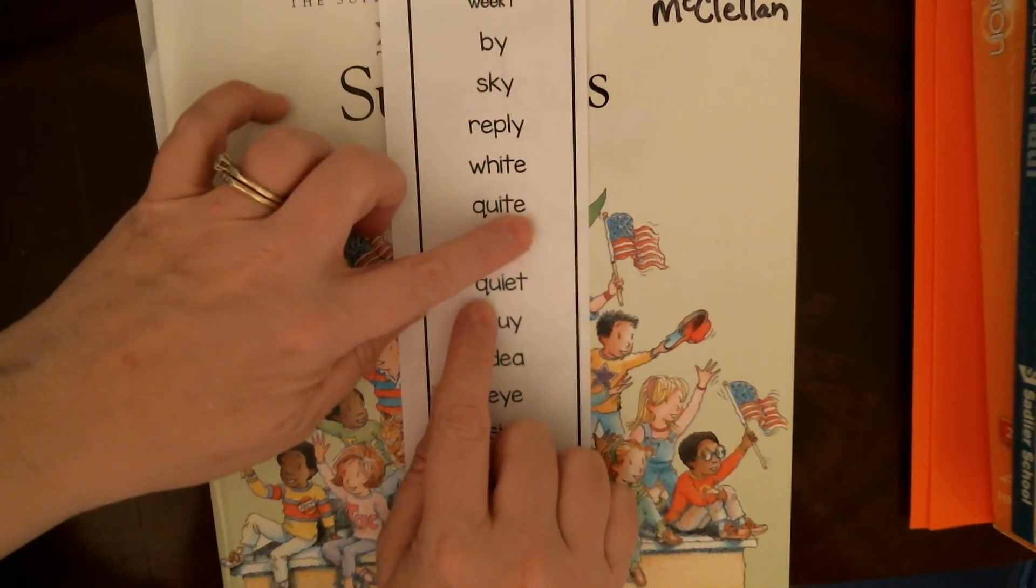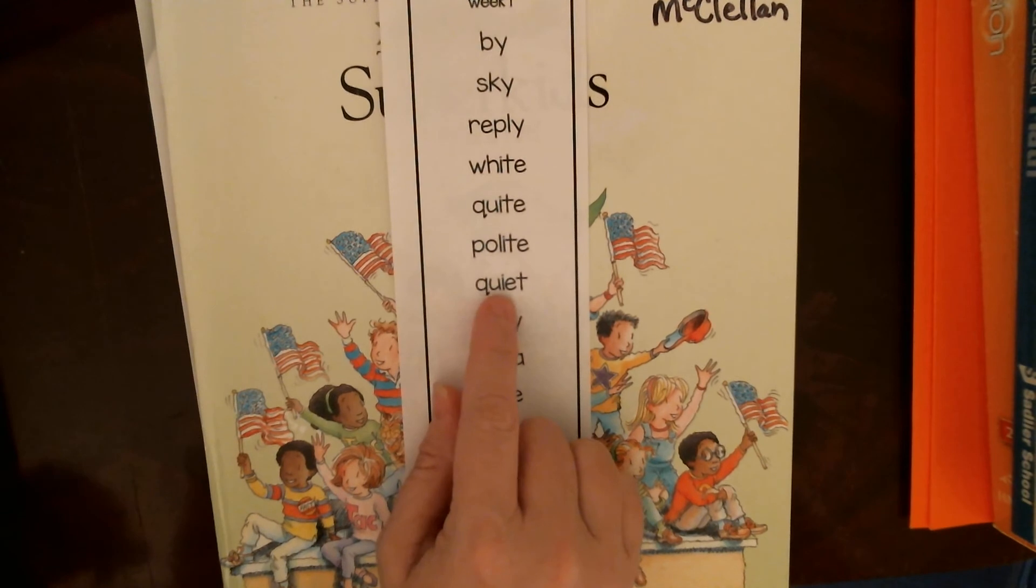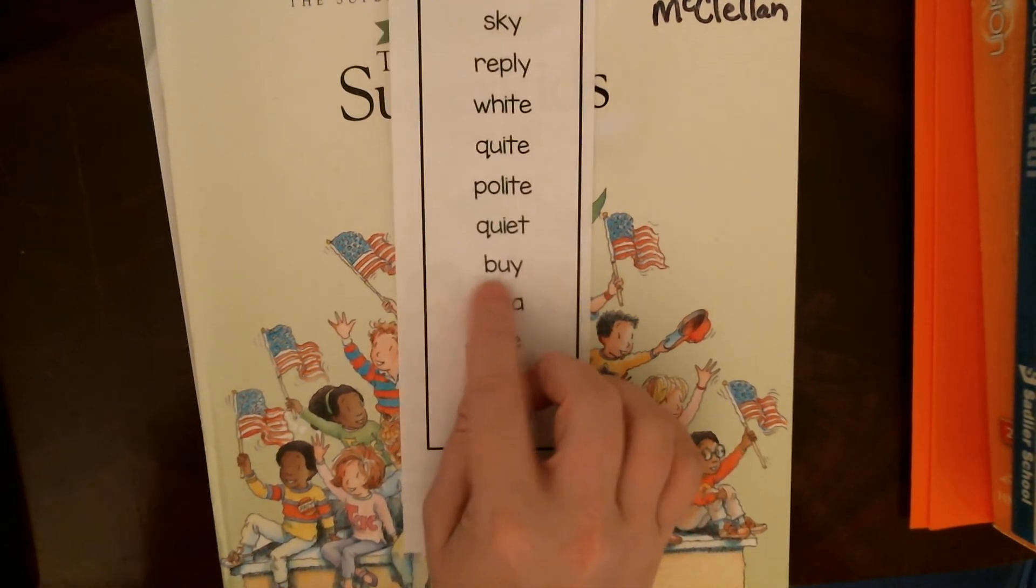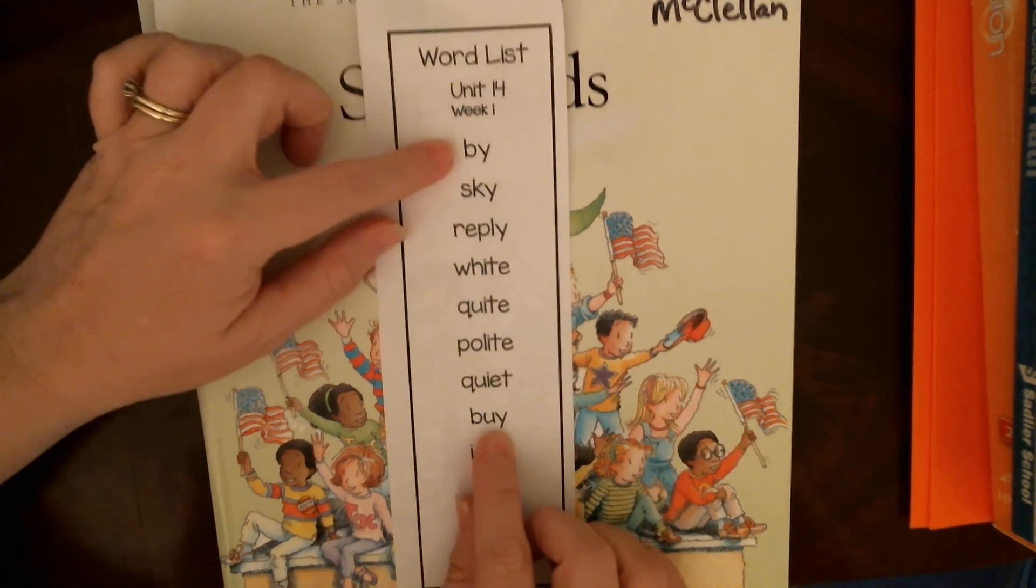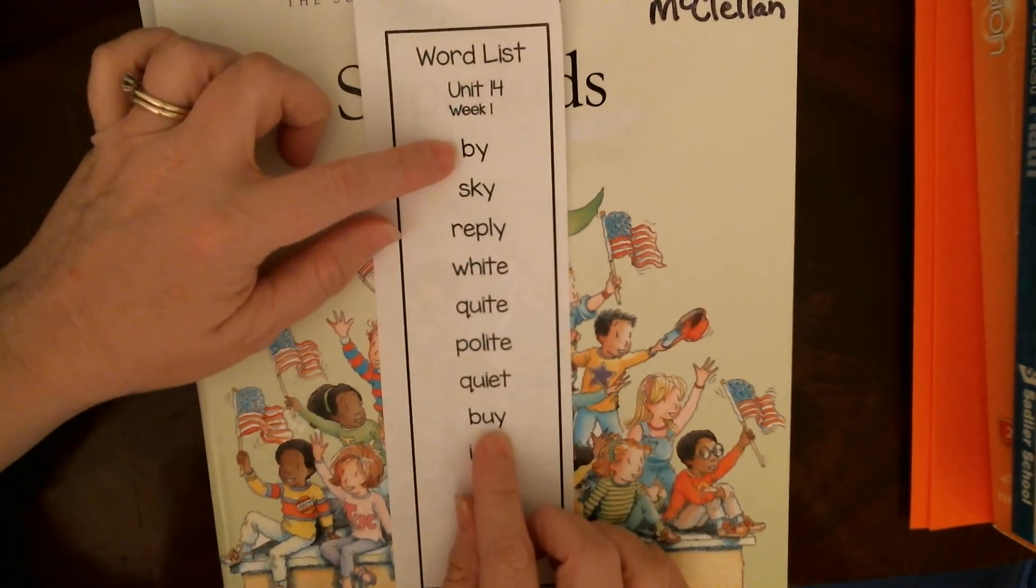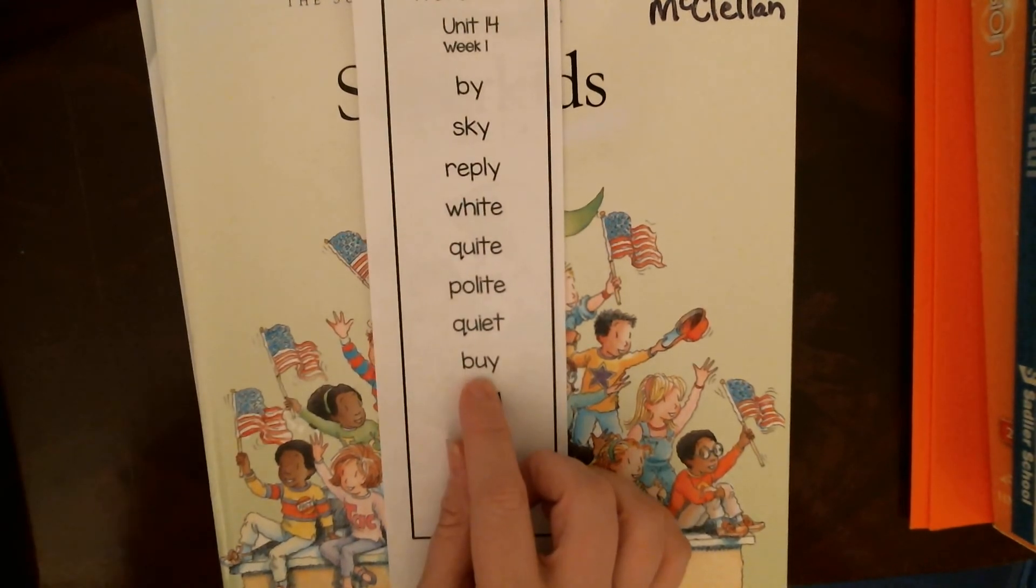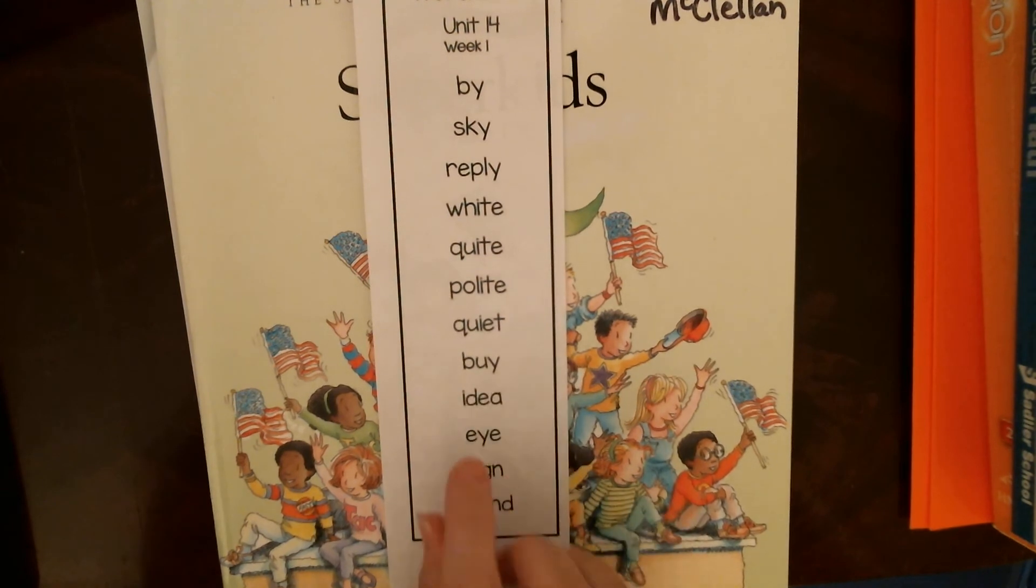This is one of those rule breakers. This is the word by. This one is I'm standing by you or my hand is by the list. This one with the U in the middle is when you buy food or buy toys when you go and pay money for things.